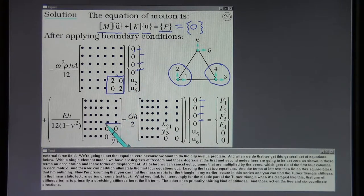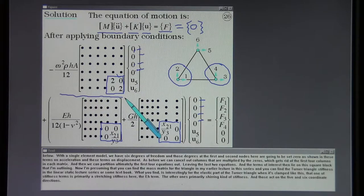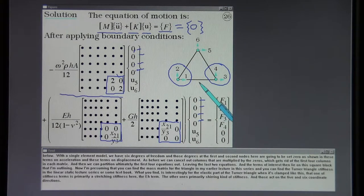The terms of interest then lie on this square block that I'm outlining. I'm presuming that you can find the mass matrix for the triangle in my earlier lecture in this series. You can find the Turner Triangle stiffness in the linear static lecture series or some textbook. What you find is, interestingly, for the elastic part of the Turner Triangle when it's clamped like this, that one of the stiffness terms is primarily a stretching stiffness here, the EH term. The other one is primarily a shearing kind of stiffness. Those act on the five and six coordinate directions.